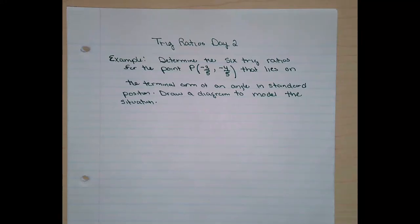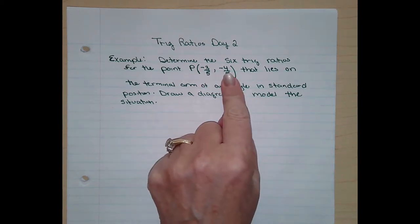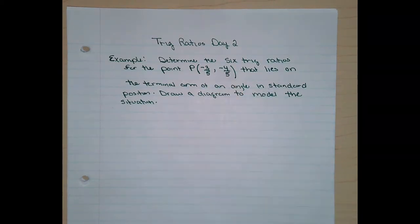Here is your example: determine the six trig ratios for the point P, with given X and Y coordinates, that lies on the terminal arm of an angle in standard position.